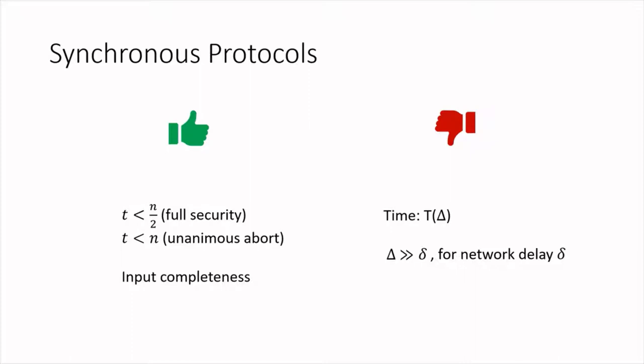So what is the downside? When we think about running a synchronous protocol over the internet, where the actual delay is hard to predict, we have to set the round length big delta large enough to accommodate any possible delay in the network. This means that for a synchronous protocol to actually work, big delta has to be set much larger than the typical network delay small delta. So the speed of synchronous protocols is proportional to the conservatively assumed worst-case delay, implying that they are slow when executed over the internet.